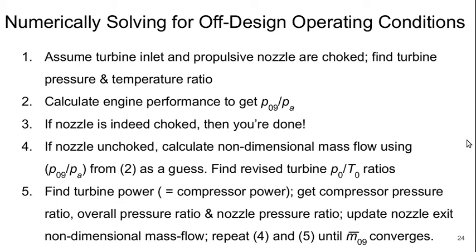Here's the procedure to numerically solve for off-design operating conditions. We assume the turbine inlet and propulsive nozzle are choked, find the turbine pressure and temperature ratios, and calculate engine performance to get P9 over Pa. If the nozzle is indeed choked, we're done. If the nozzle is unchoked, we calculate the non-dimensional mass flow using the nozzle pressure ratio as a guess, find revised turbine pressure and temperature ratios, then find turbine power — which equals compressor power — and get the compressor pressure ratio, overall engine pressure ratio, and nozzle pressure ratio. We update the nozzle exit non-dimensional mass flow and repeat until it converges.